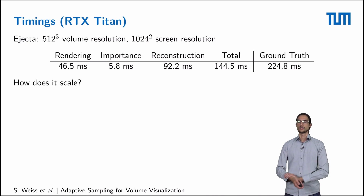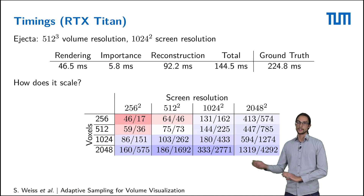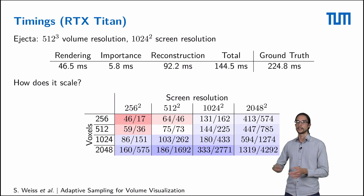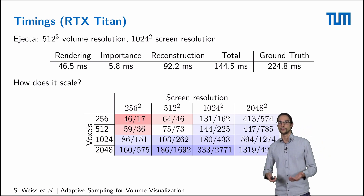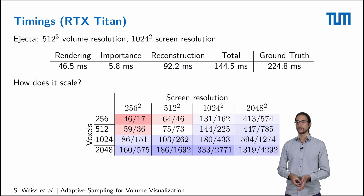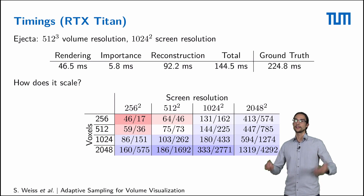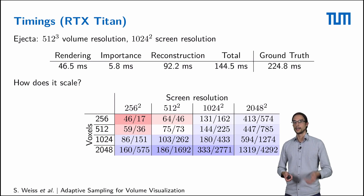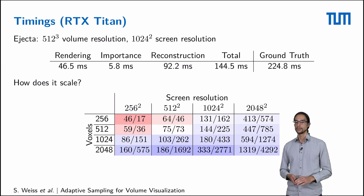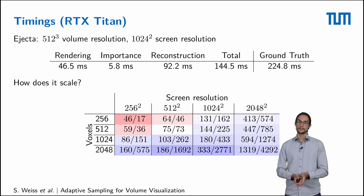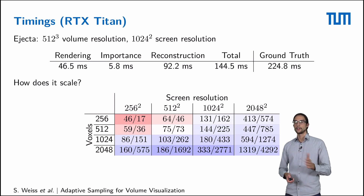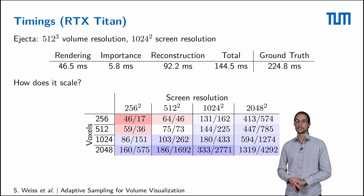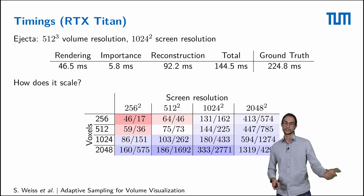How does this scale with the volume resolution and the screen resolution? This table shows results typical across all tests: the first value per cell is the pipeline time in milliseconds, the second is the ground truth rendering time. For a low screen resolution and low number of voxels, the regular rendering is faster than the whole pipeline. However, for larger screen sizes and larger volumes, there is a turning point where the adaptive sampling pipeline becomes faster. This turning point differs from scene to scene and step size to step size, but we have always observed it.